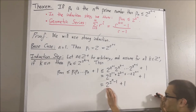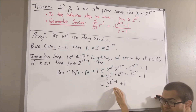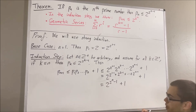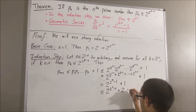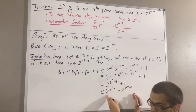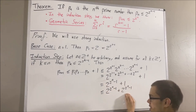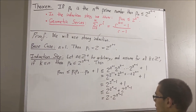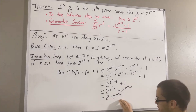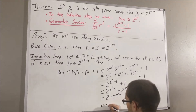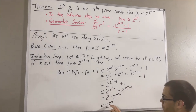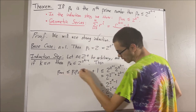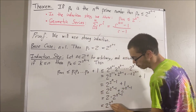Now, of course, this first term is a positive integer, so 1 is less than or equal to this term. Therefore this inequality must be true. Then, this is just equal to twice this value, and from our rules for exponents, we know that this is just equal to 2 to the power of 2 to the n. So we have shown that Pn+1 is less than or equal to 2 to the power of 2 to the n, which was the goal of the induction step.